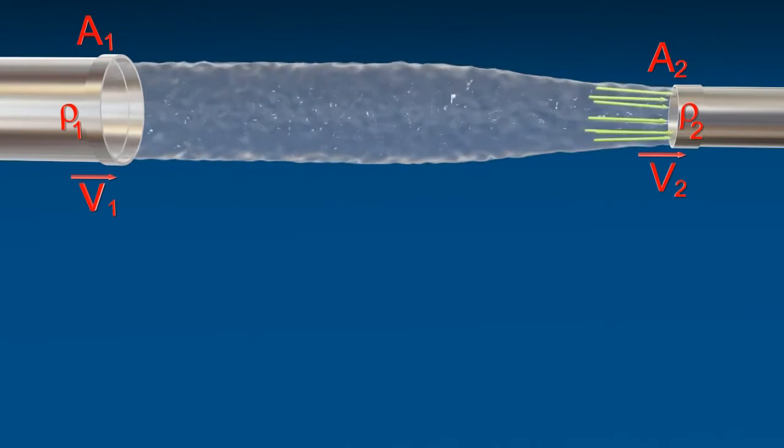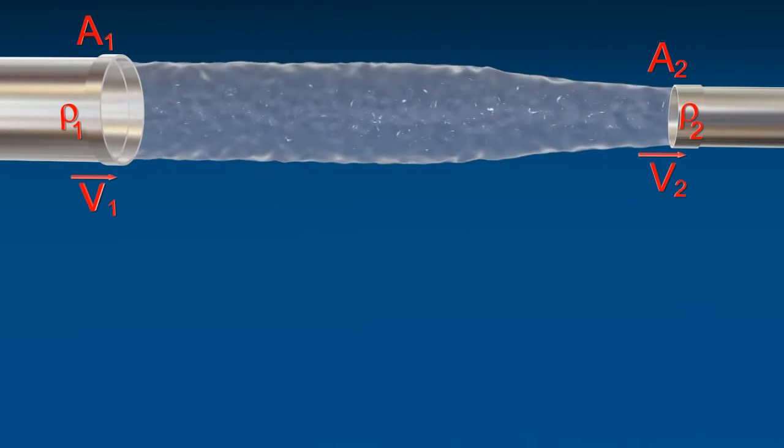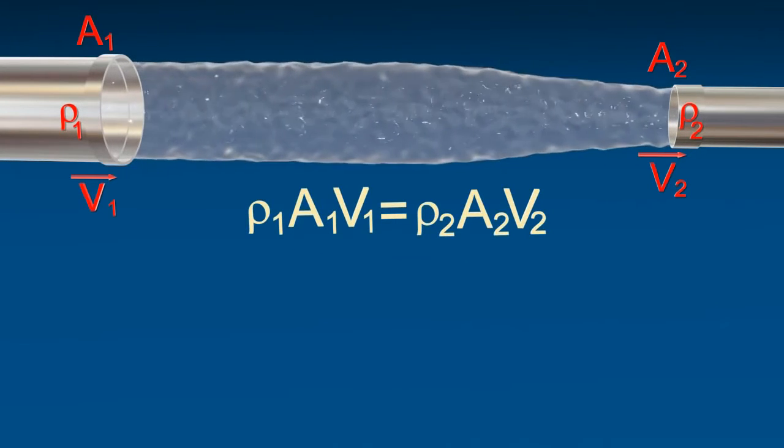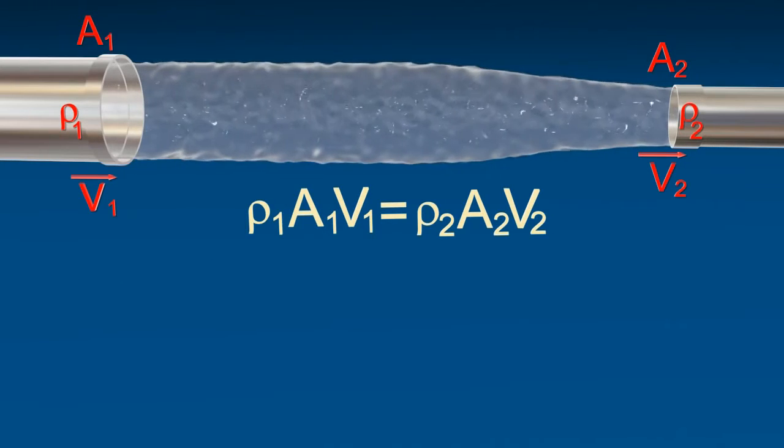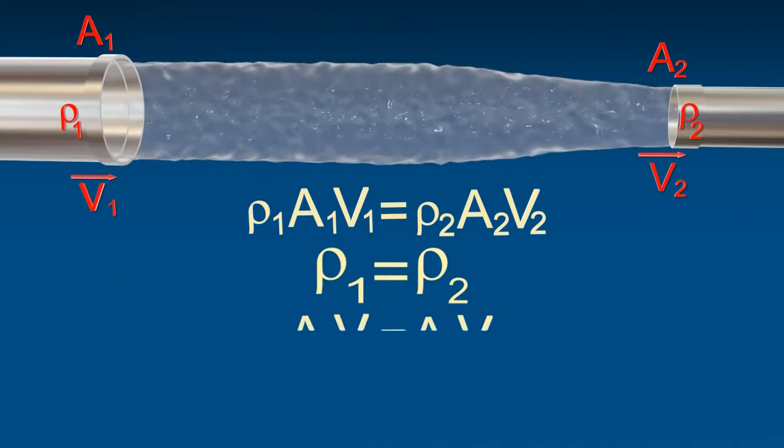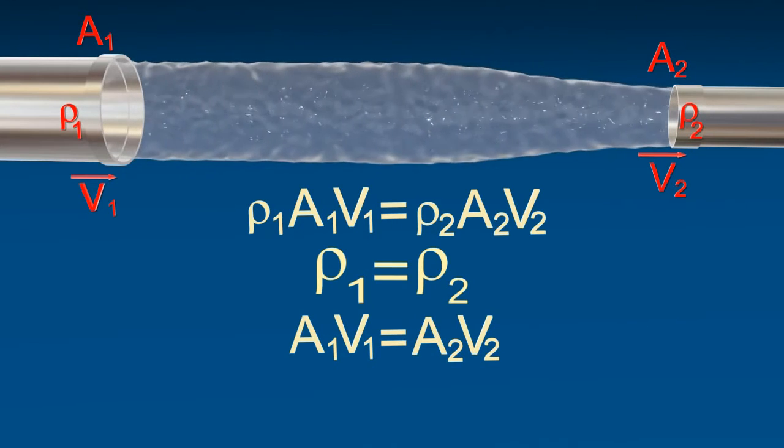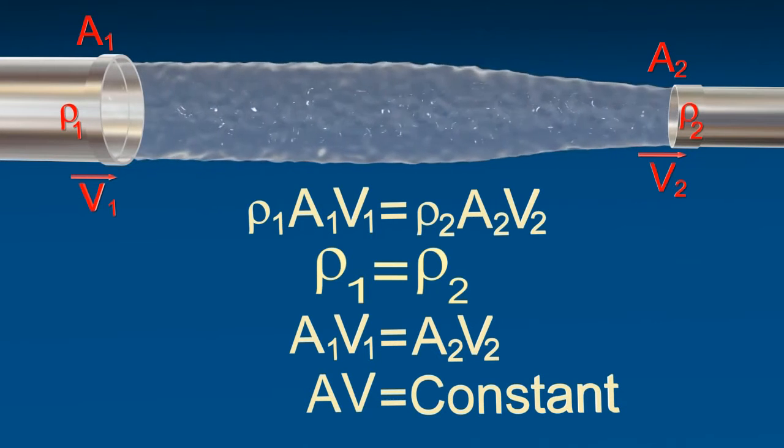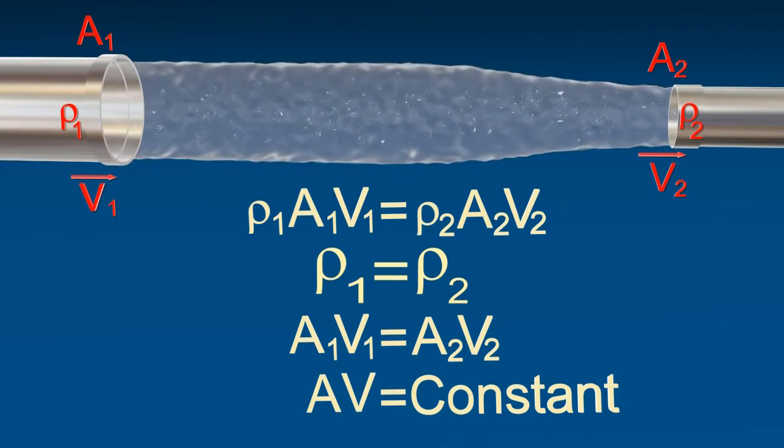Assuming there is no loss of fluid in tube for ideal fluid, Av equals constant. This is the equation of continuity.